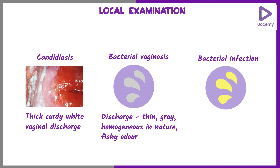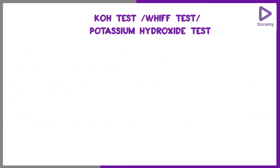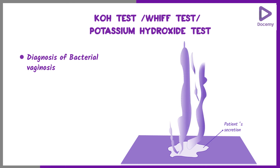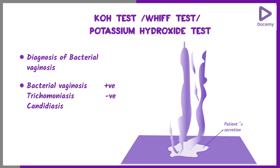In a bacterial infection the discharge will be purulent in nature. You can perform a KOH test — a potassium hydroxide test — which is mainly for the diagnosis of Bacterial Vaginosis. We also call it the Whiff test, wherein you apply a drop of KOH onto the discharge and that releases a particular malodor, confirming the diagnosis of Bacterial Vaginosis. It is not necessarily positive in the other conditions.